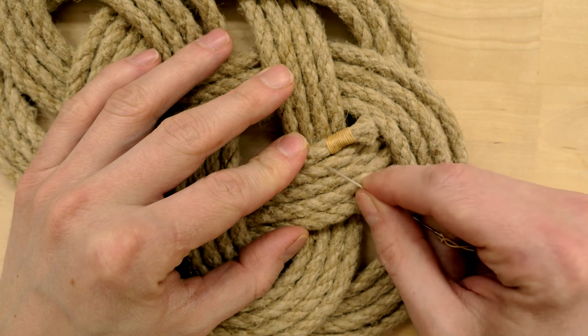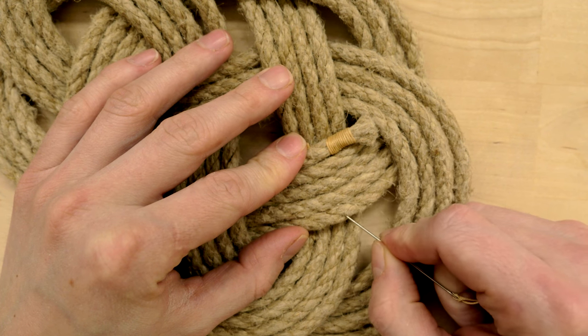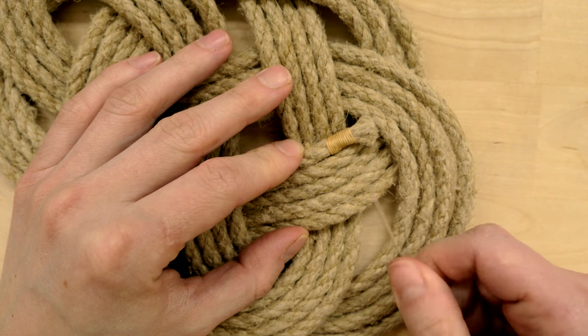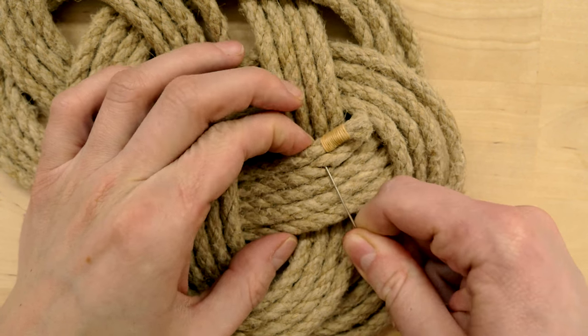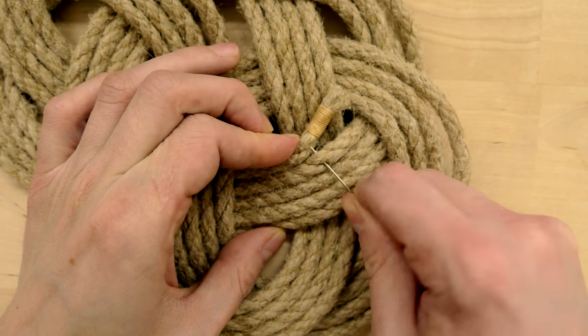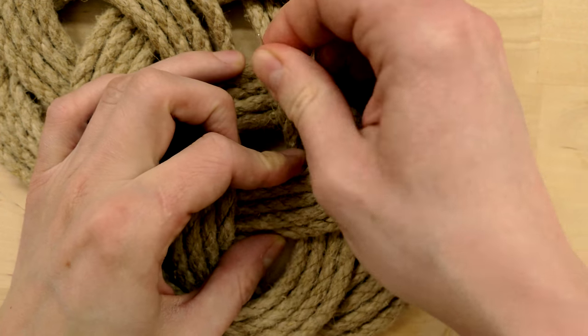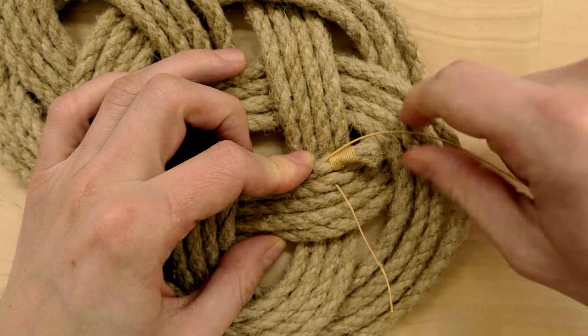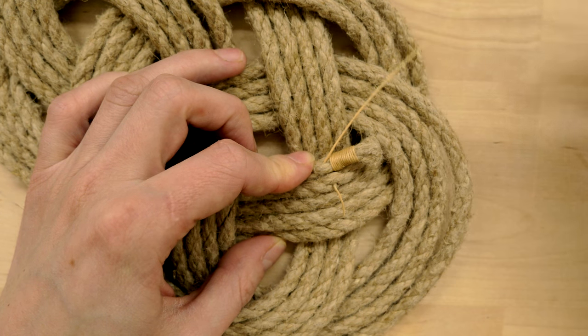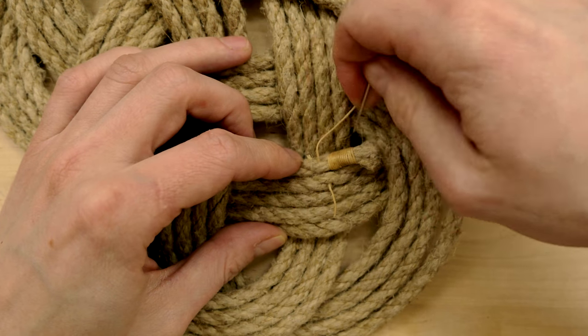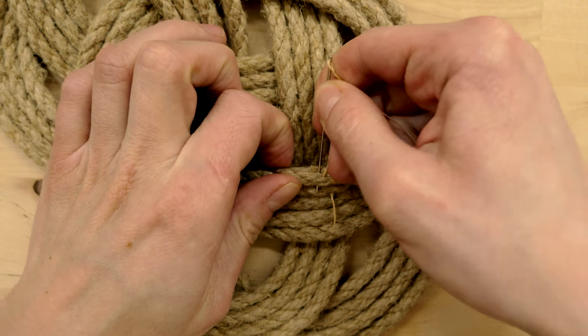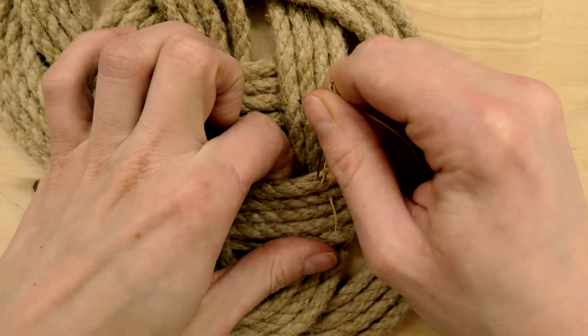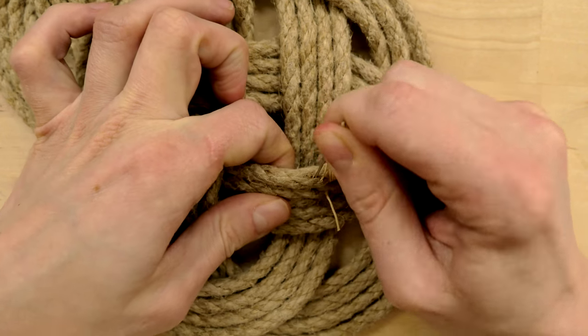Here we have the passes that we would like to stitch together. Take your needle and go under two of the passes. Then we're going to turn back down and we're going to go under all of our passes and exit on the bottom.